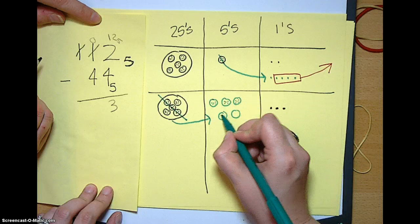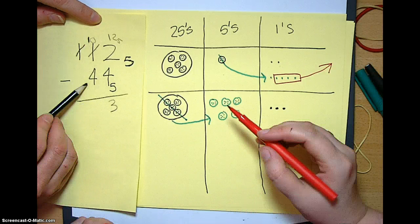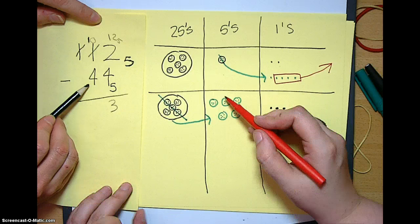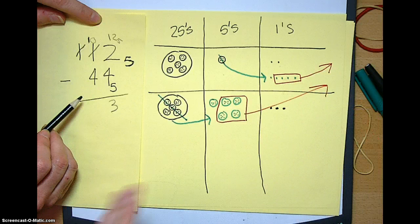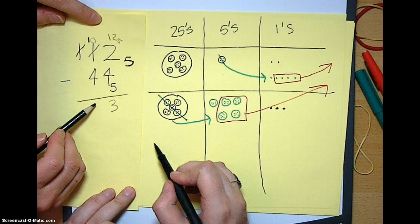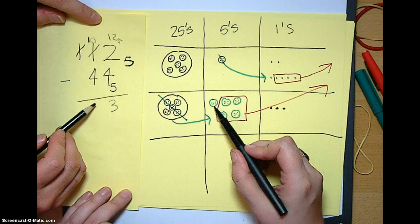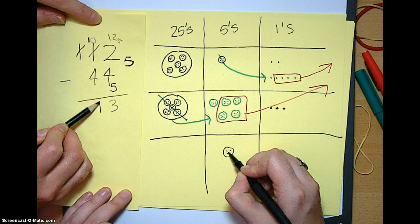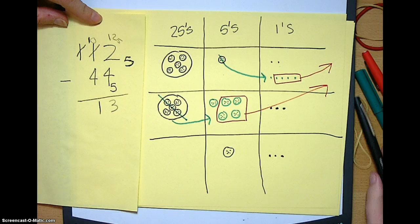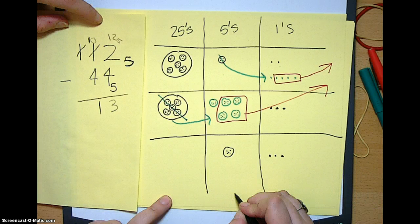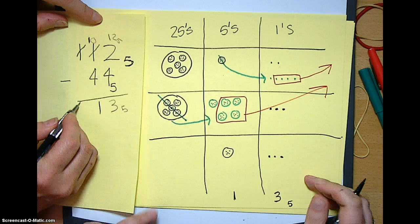And we still have way too many things because we can't have 5 of anything anywhere because it's base 5. So we're going to take these 4 and make them go away. So now we can draw our next line for our next step and move everything down. So we still have 1 here and 3 here. So this actually comes out to 1, 3 base 5. And there you go.